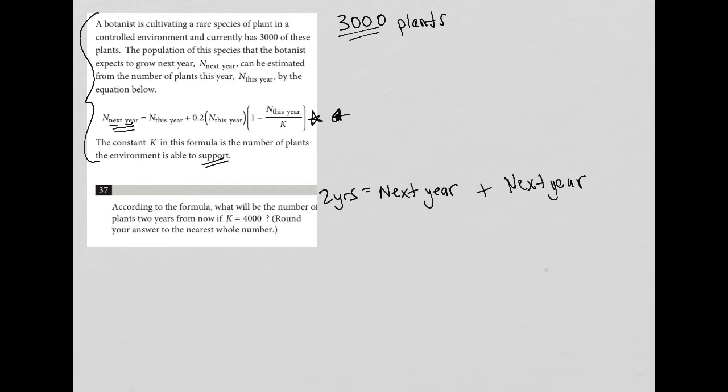So I'm going to start off with, well, for next year, so I'll just say N1 for one year from now, is equal to N this year, which is 3,000 plants, plus 0.2 times N this year, which again is 3,000 plants. And then I have one minus those 3,000 plants divided by K, which is, according to the question, 4,000.